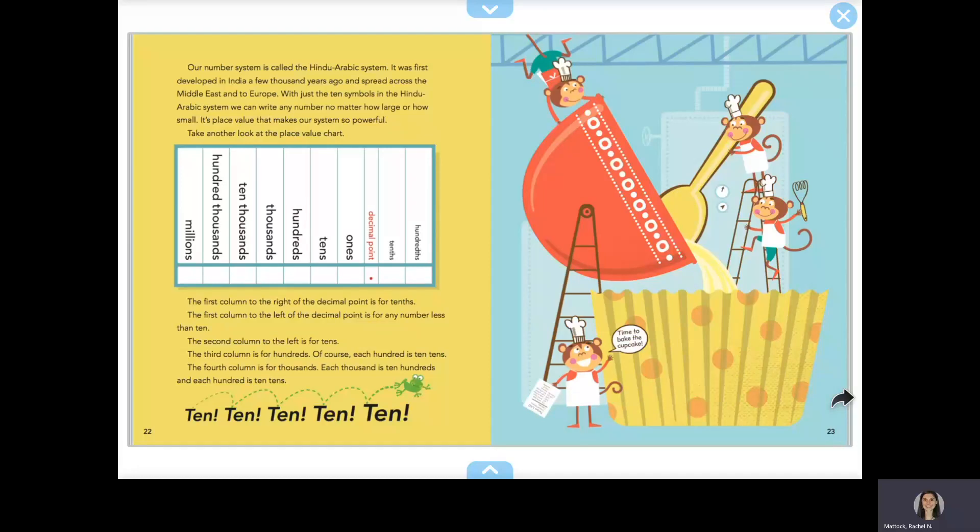Take another look at the place value chart. The first column to the right of the decimal point is for tenths. The first column to the left of the decimal point is for any number less than ten. The second column to the left is for tenths. The third column is for hundredths. Of course, each hundred is ten tenths.